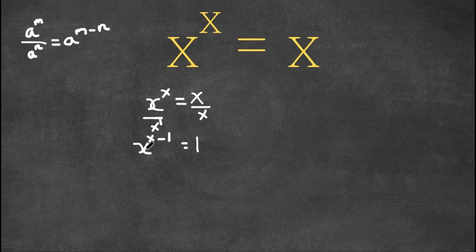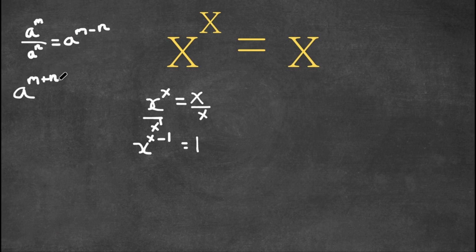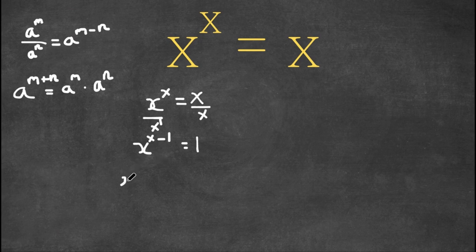Another important property of exponents is that if we have something in the form a to the power of m plus n, this is equal to a to the power of m times a to the power of n. So x to the power of x minus 1 would equal x to the power of x times x to the power of negative 1, and this is still equal to 1.